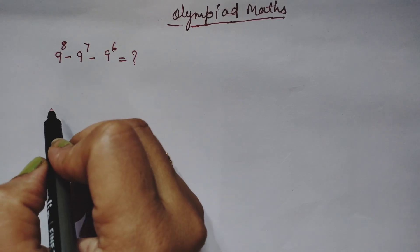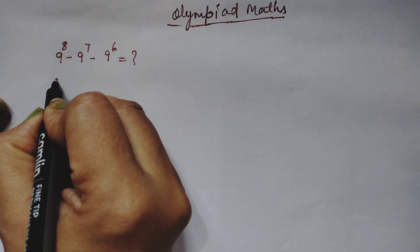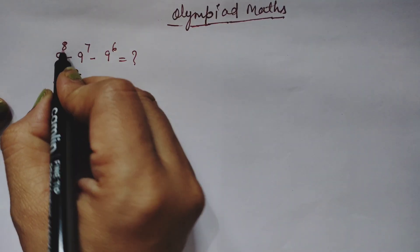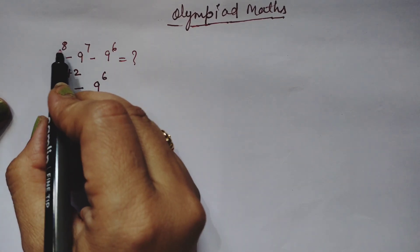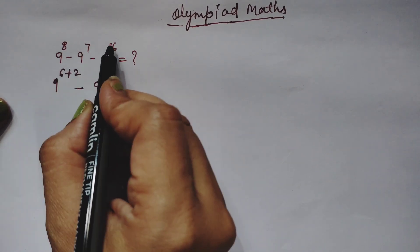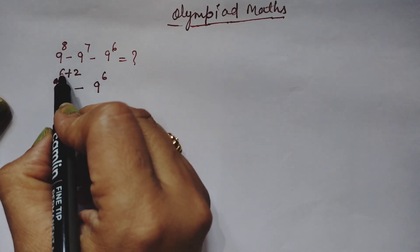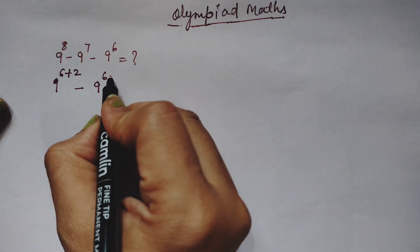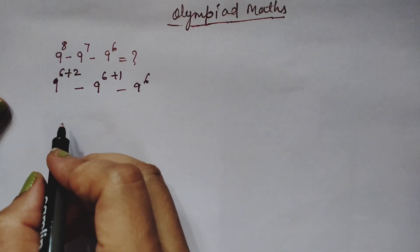To solve this, we will first split the exponent 8 in terms of 6 plus 2, and 7 as 6 plus 1. The reason is that the lowest exponent among the three terms is 6, so we split 8 and 7 accordingly. So it becomes 9 to the power (6+2), plus 9 to the power (6+1), minus 9 to the power 6.